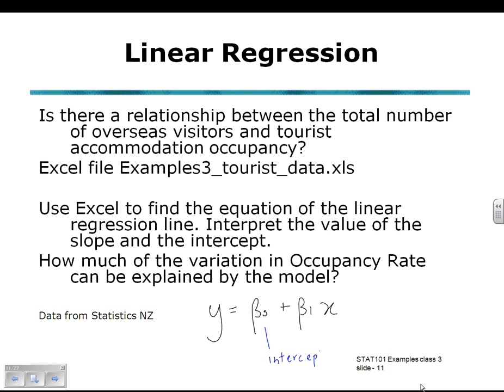In this example, considering the X's and Y's, how much of the variation in occupancy rate can be explained by the model? Y is the one we want to predict, so the occupancy rate is Y, and we will be explaining this by the model or the X values, which are the number of overseas visitors.